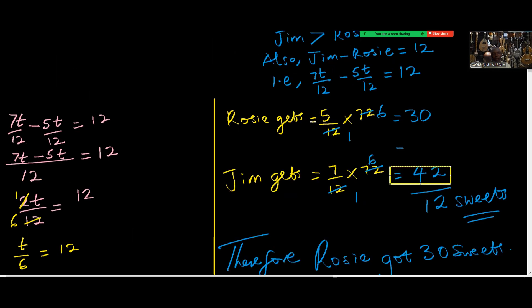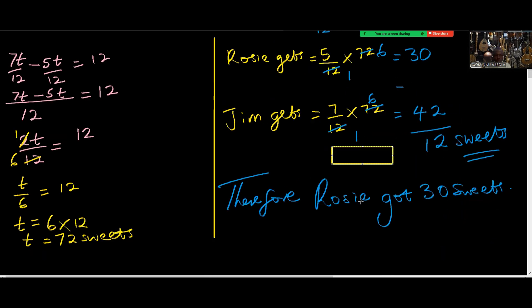Or we go back to the ratio and say Rosie gets 5 over 12 times 72 which is 30 sweets, and Jim gets 7 over 12 times 72 which is 42 sweets. The difference of course is 12 sweets. So Rosie got 30 sweets while Jim got 42 sweets.